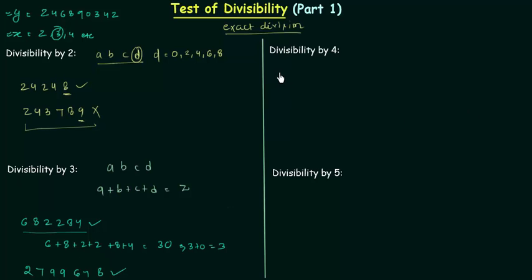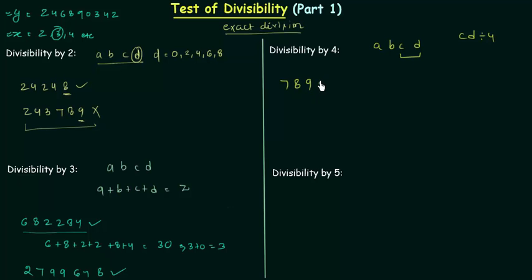Now we move to divisibility by 4. If the number formed by the last two digits is divisible by 4, then the entire number is divisible by 4. For example, if the number is ABCD, the last two digits form CD, and if CD is divisible by 4, then ABCD is divisible by 4. Take the number 78952: the last two digits form 52, and since 4 × 13 = 52, the number 78952 is divisible by 4.